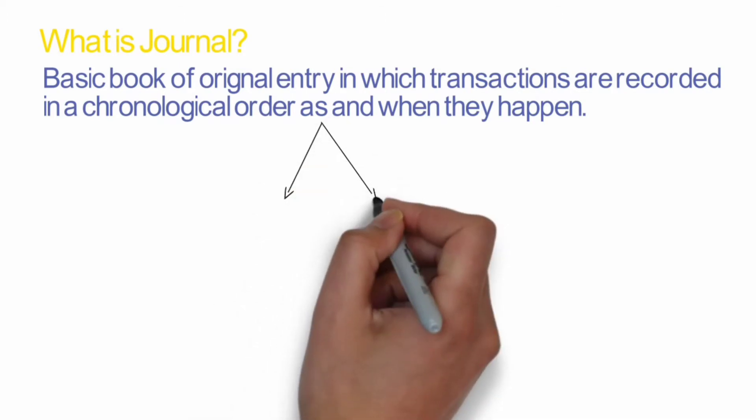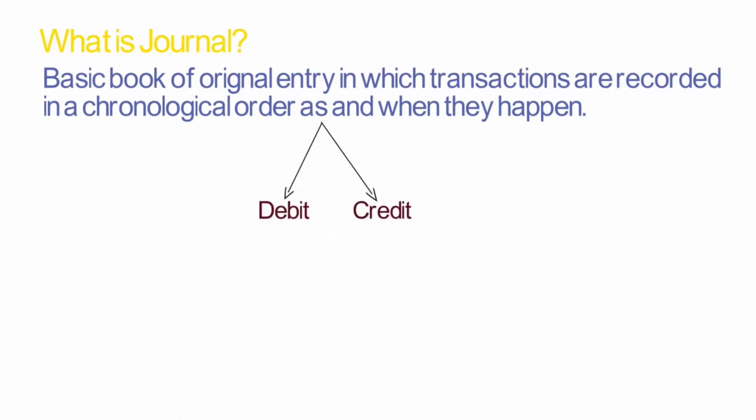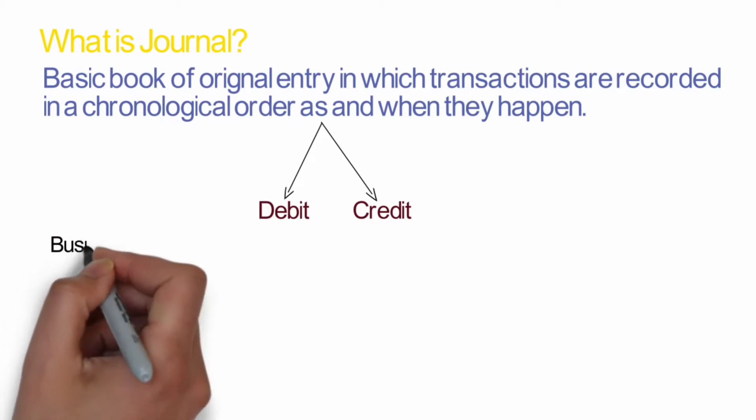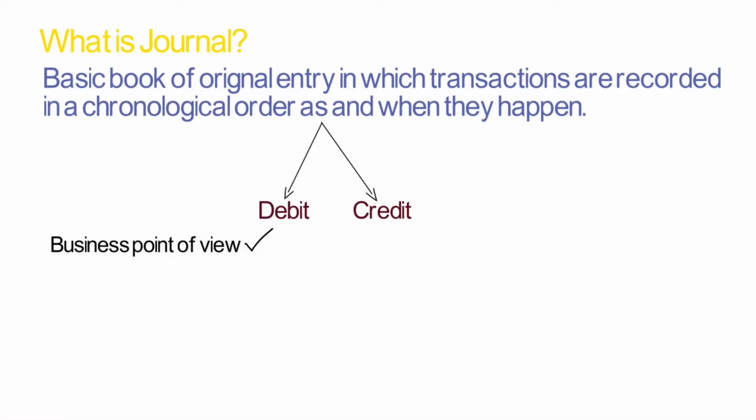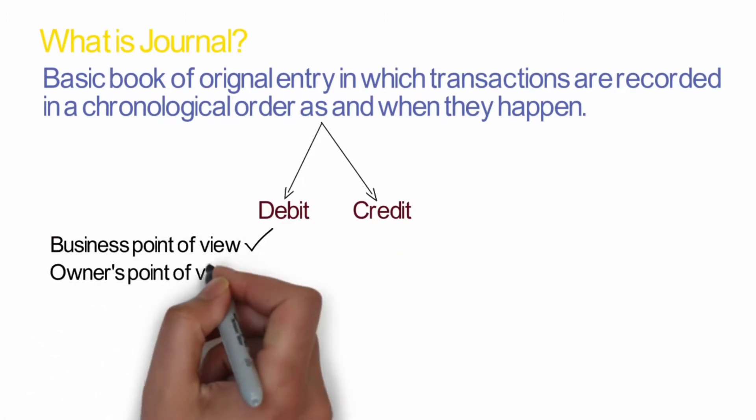For every transaction there will be two impacts: debit and credit. The most important thing to understand is that any transaction should be debited or credited, which we know as the double entry system. If any account will be debited, then another account must be credited. Whenever we record a transaction, we will think from the business point of view and not from the owner's point of view.